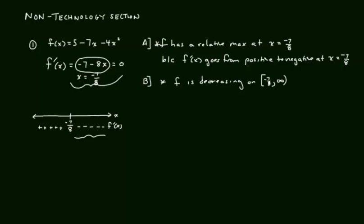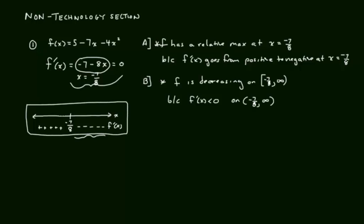F is decreasing on the interval negative 7/8 to infinity, because F prime of x is less than 0 on the open interval (negative 7/8, infinity). This no-point number line helps us answer both parts A and B, but I will not receive credit — it does not count for justification. Your words count as justification. This statement here counts as justification, and this statement here counts as justification.